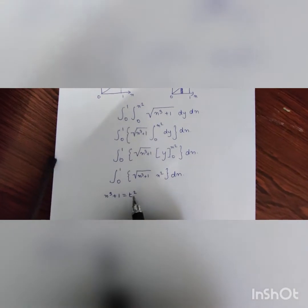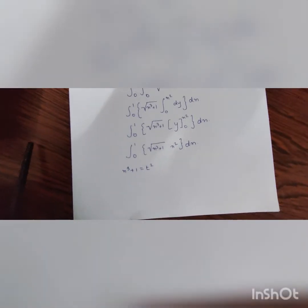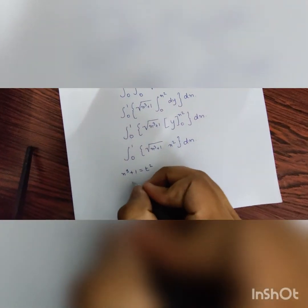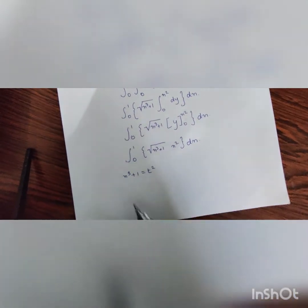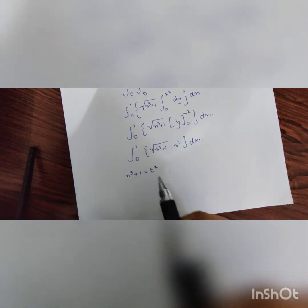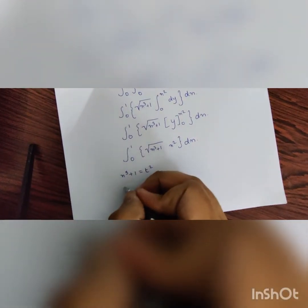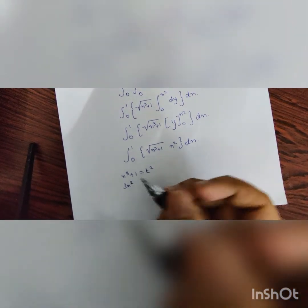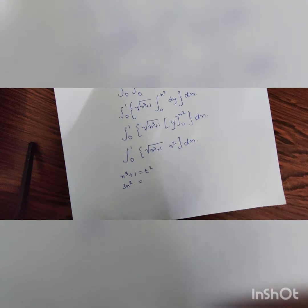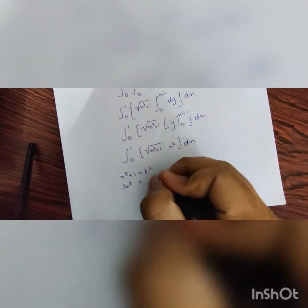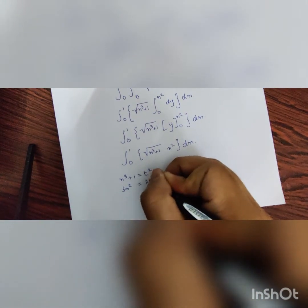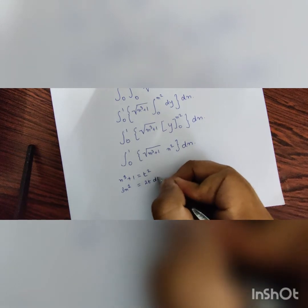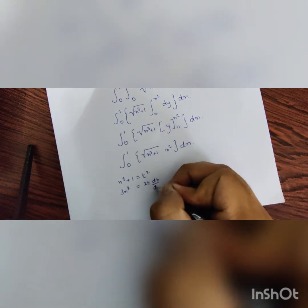x³ plus 1 is equal to t squared. I have taken this as t squared as it will be much easier in helping us solve the question forward. Now, what I will do is I will differentiate on both sides. So, it will become 3x squared. 1 is a constant so it goes out and because we are differentiating this in terms of x, this becomes 2t dt/dx.